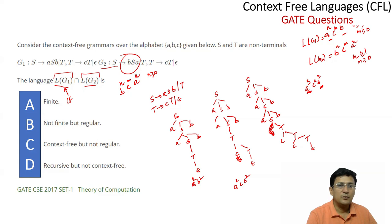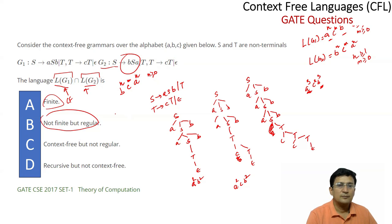The intersection of L(G1) and L(G2) will not necessarily be context-free, because context-free languages are not closed under intersection. It also cannot be finite, because both languages are infinite. There is an interesting property: S can directly produce T, and T → cT, so S can produce strings of only C's, i.e., C^m.